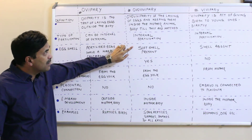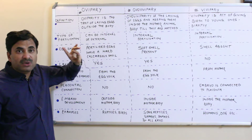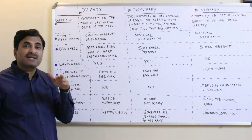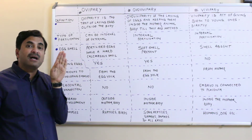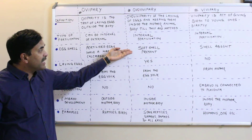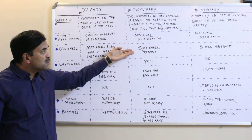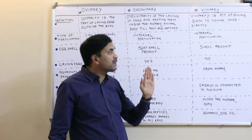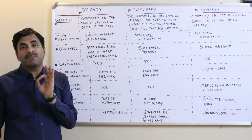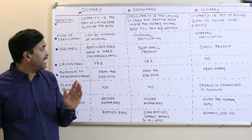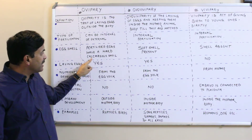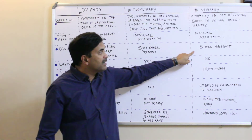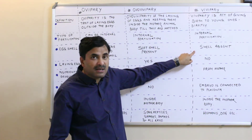Ovoviviparous organisms also have a shell around their eggs, but here a soft shell is present, because the eggs are not laid outside — they remain inside the mother's body. In viviparous organisms, the eggs are not surrounded by shells, though egg membranes are present. So: hard calcareous shell in oviparous, soft shell in ovoviviparous, and no shell in viviparous.